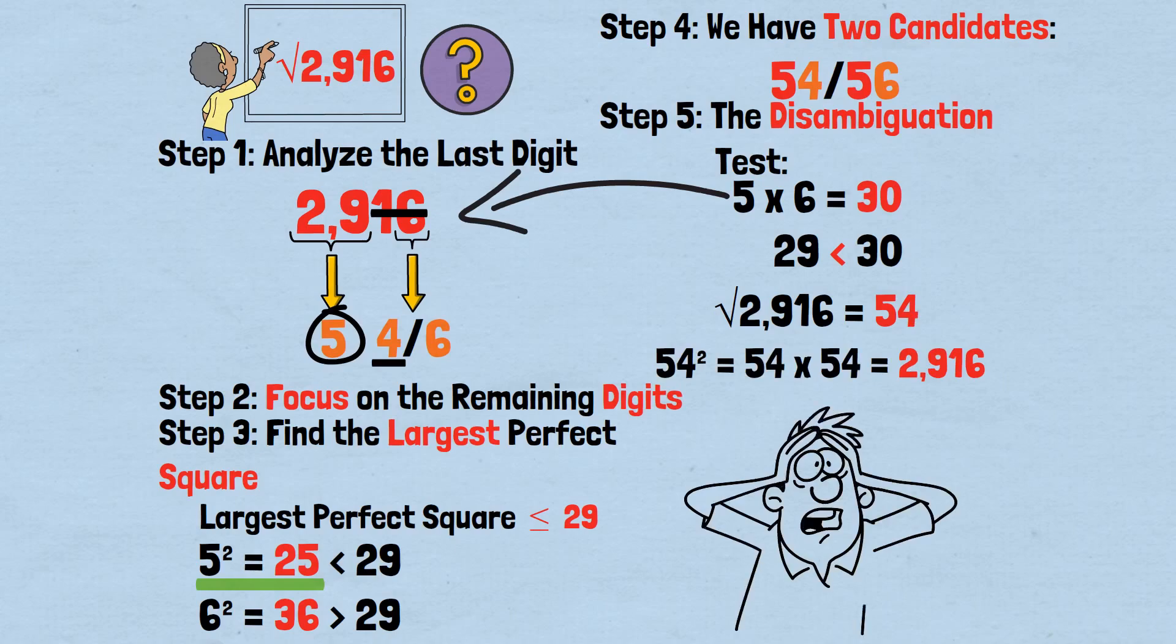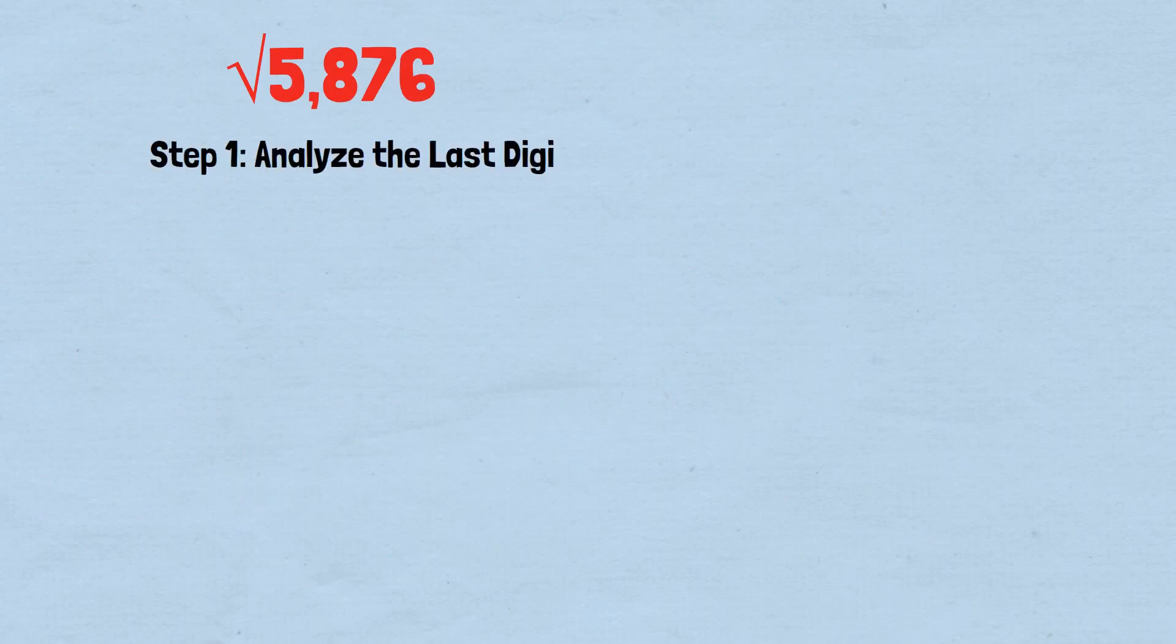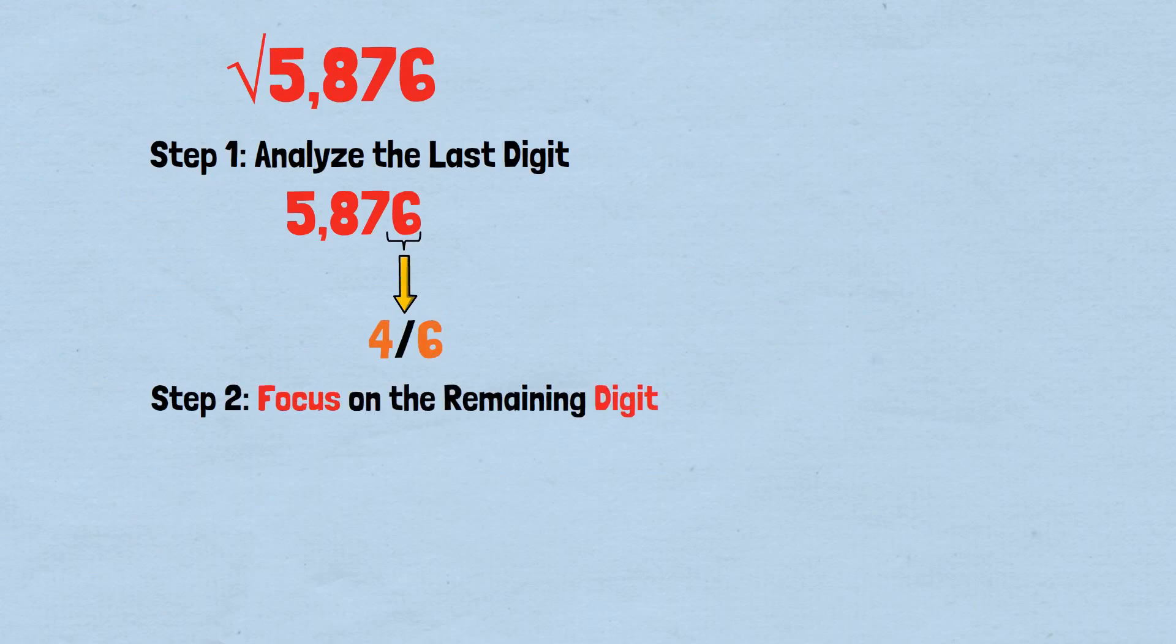Now let's tackle something that would leave most people completely stumped: the square root of 5,876. Step 1: Analyze the last digit. Our number is 5,876. The last digit is 6. The square root could end in either 4 or 6. Step 2: Focus on the remaining digits. Cross out the last two digits, 76, and focus on 58.